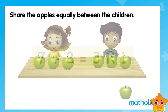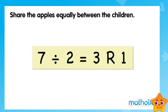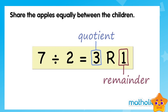We can write this division equation. The result is called the quotient. The part left over is called the remainder. We read the equation as seven divided by two equals three, remainder one.